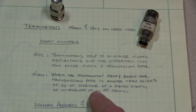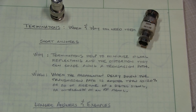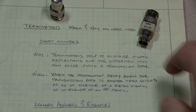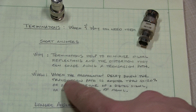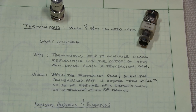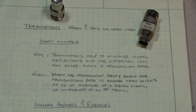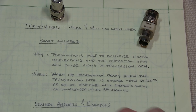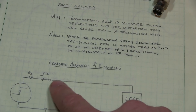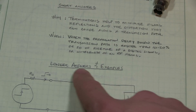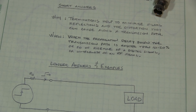It'll be frequency dependent when you need them, which is why you don't typically see terminators used for DC signals. But as the signal frequencies go up and the rise times go down, the use of transmission lines and proper terminations becomes more and more important. In order to understand why, we need to take a look at some longer answers and some examples.